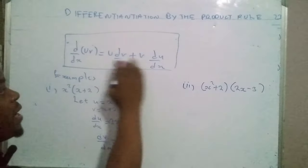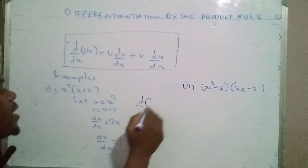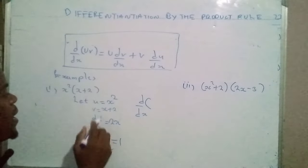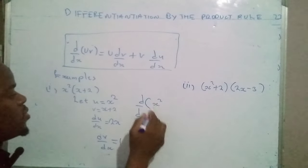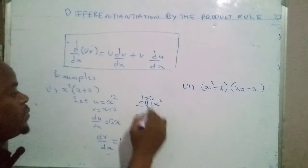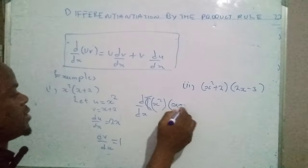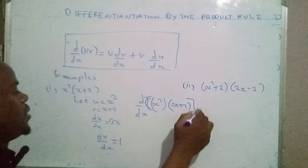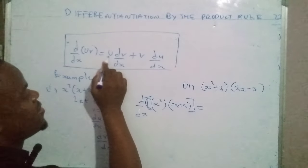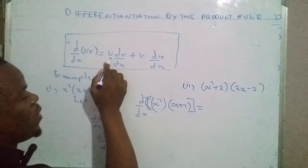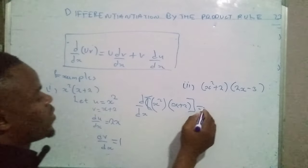After having differentiated these two functions, we are now going to apply the product rule. So d/dx of the product of the two functions u and v — where u is x squared and v is x plus two — equals: we write the value of the function u, which is x squared,